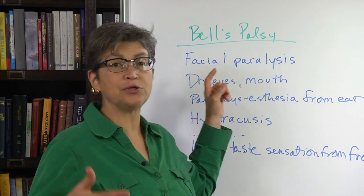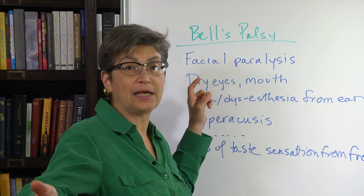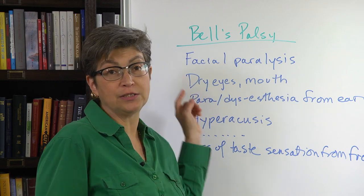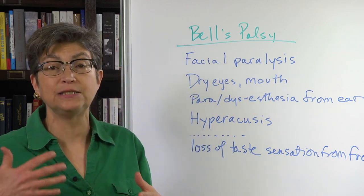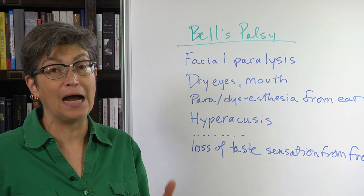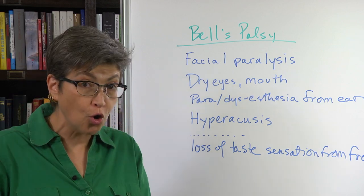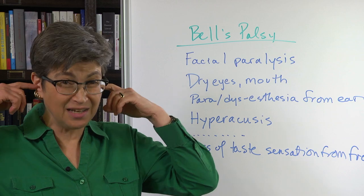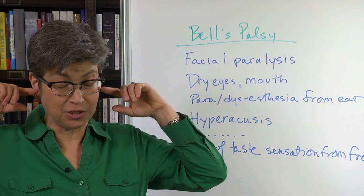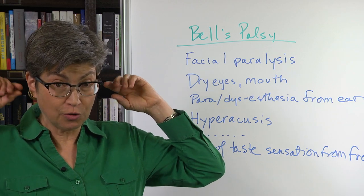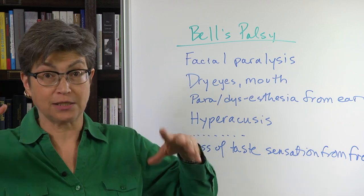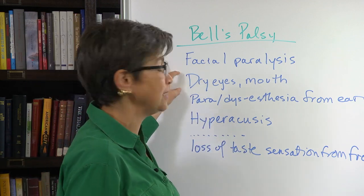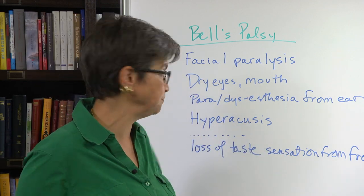What else? Remember there's a parasympathetic outflow. The parasympathetic outflow is going to be interrupted, and that's going to lead to dry eyes, dry mouth, dry nose — just dryness. Even the sebaceous glands that create earwax are off. So there's just dryness because there's none of this secretion.